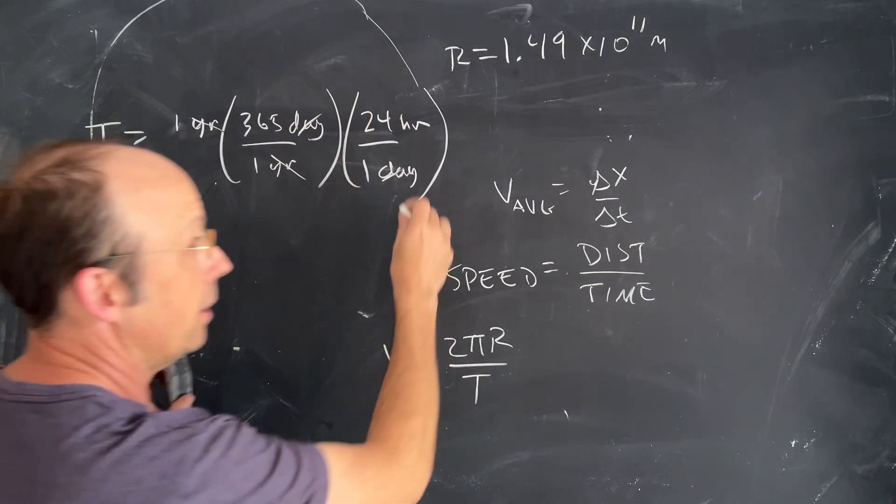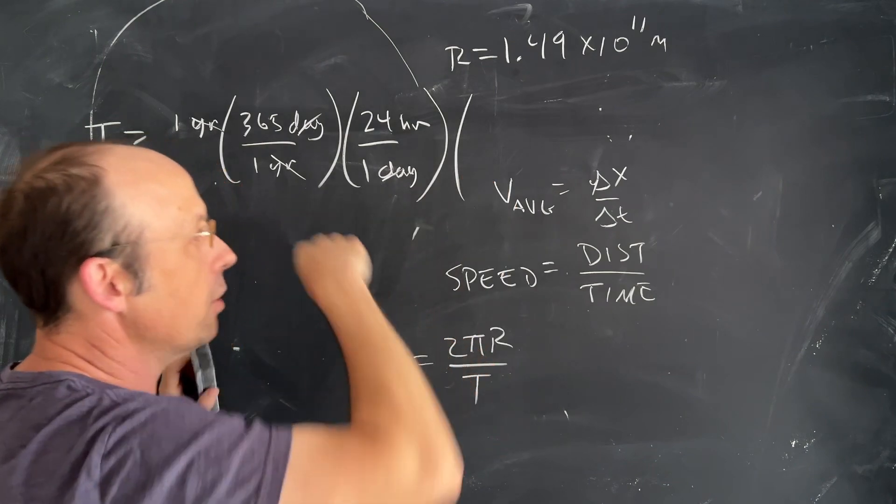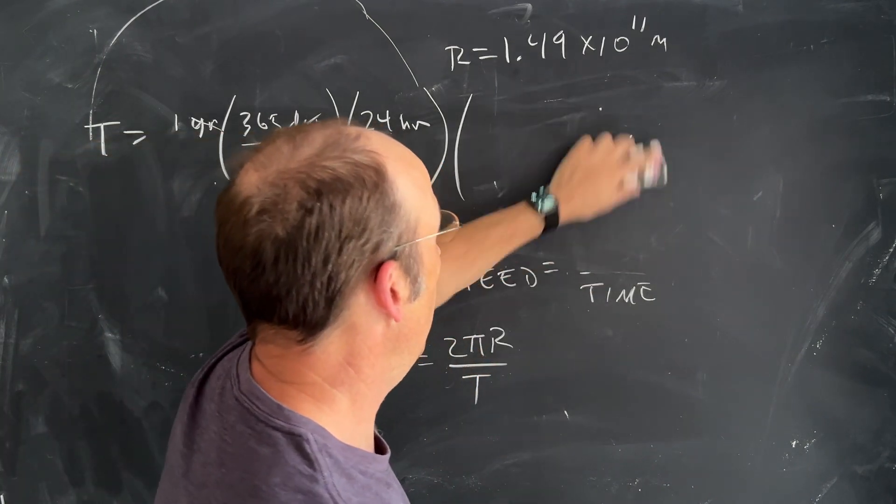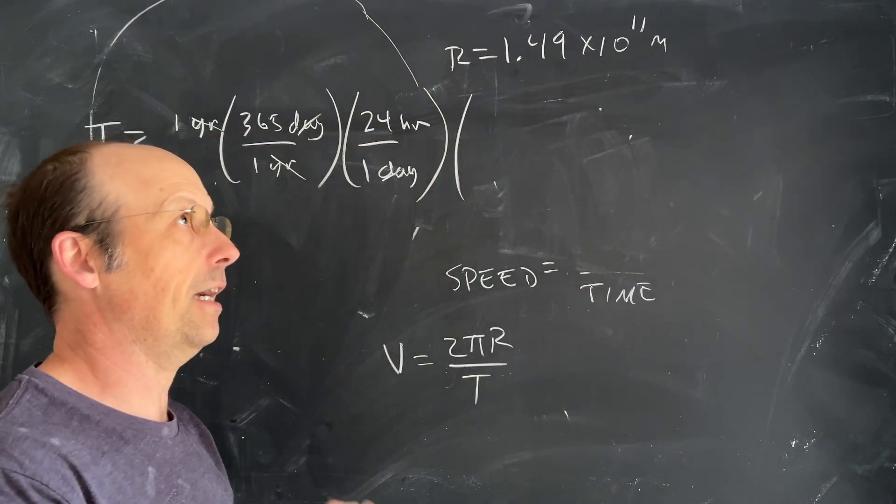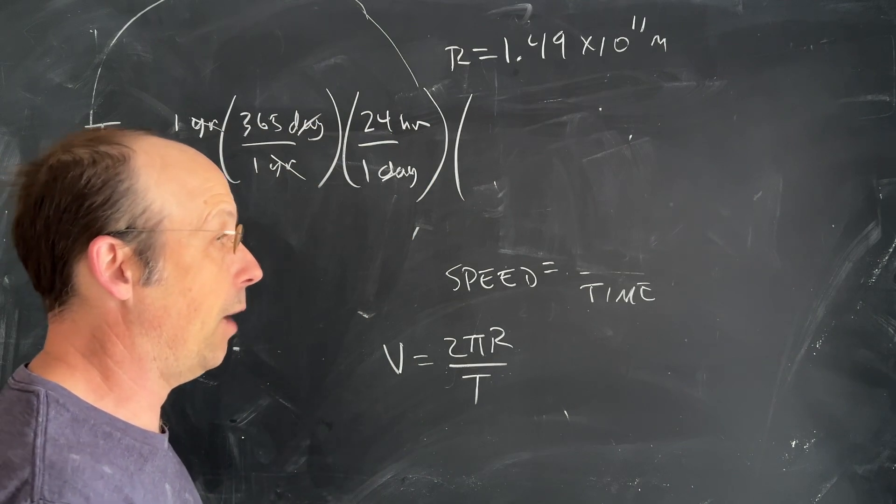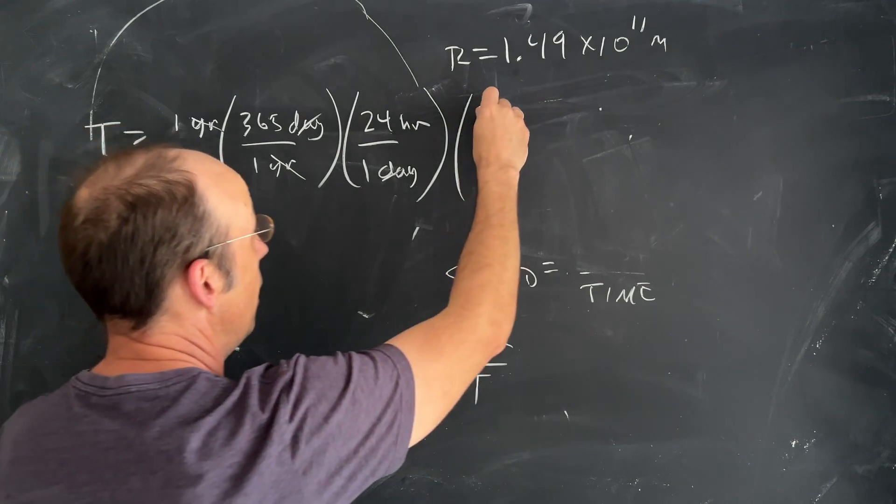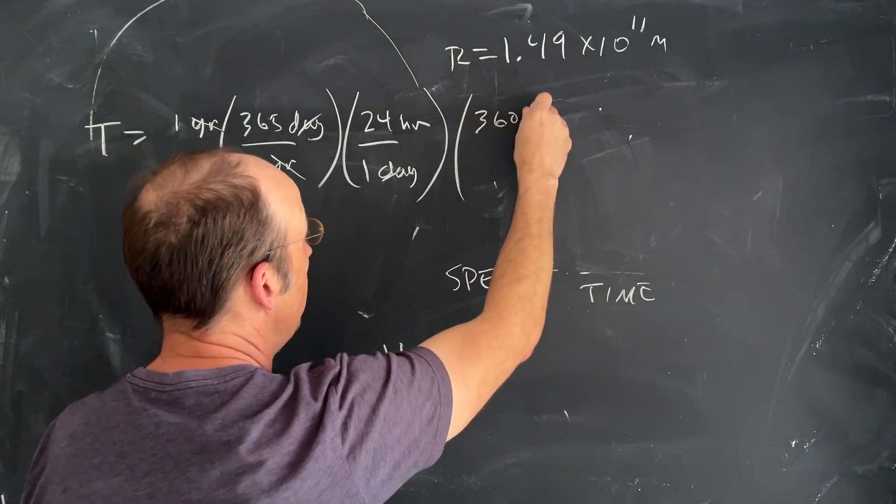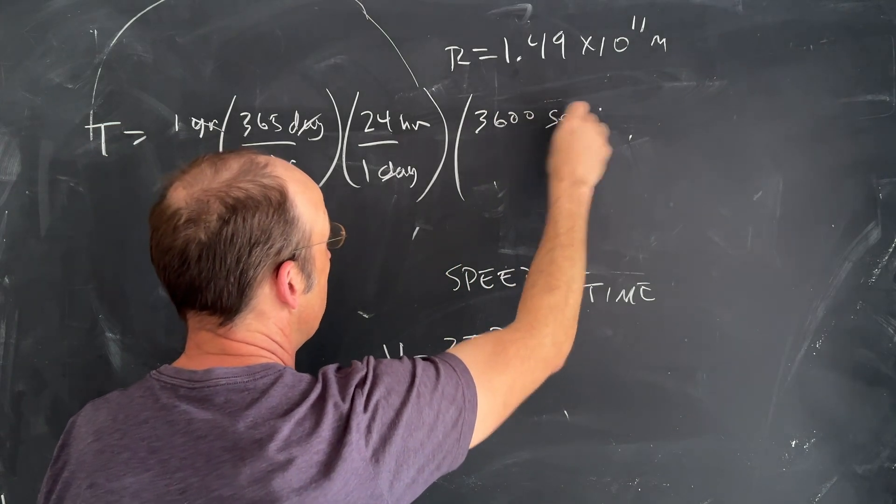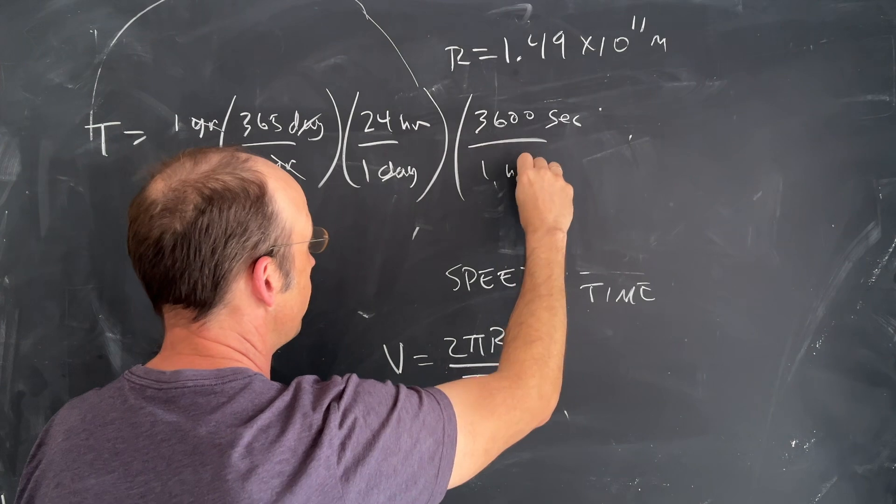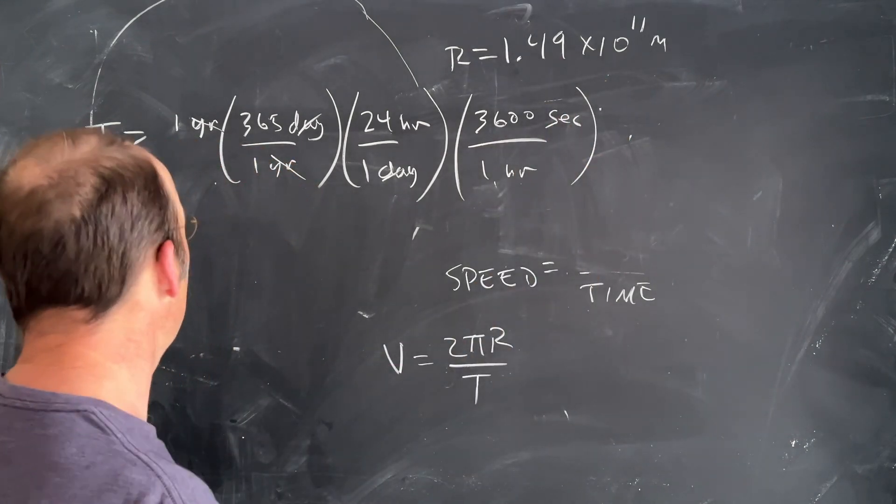Now I need to convert hours to seconds. I know that there are 60 minutes in an hour and 60 seconds in a minute, so 60 × 60 = 3600. There are 3600 seconds in one hour, and that will give me my time.